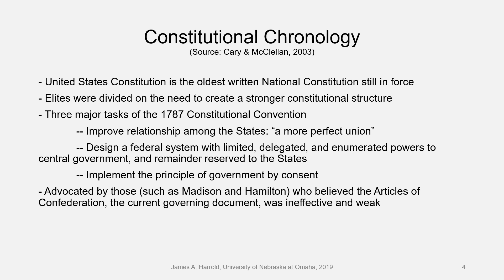The three major tasks of the 1787 Constitutional Convention are reflected in the wording itself. The first task was to improve the relationship among the states — in the preamble you see the term 'in order to form a more perfect union,' which meant to say we're forming a more complete union than we had under the Articles of Confederation. The second thing was to design a federal system with limited, delegated, and enumerated powers to the central government and the remainder reserved to the states — which powers of government belonged to the central government and which belonged to the states.